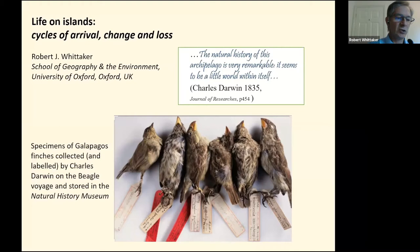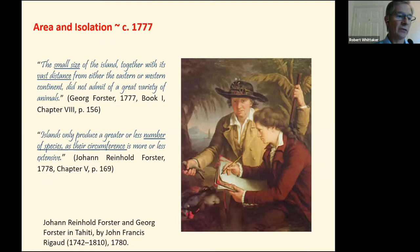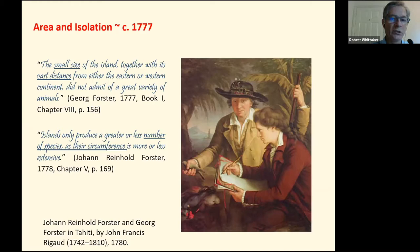I think Charles Darwin put his finger on it in this observation when he wrote: 'The natural history of this archaic world is very remarkable. It seems to be a little world within itself.' Even before Darwin, the German father and son naturalists Johann Reinhold Forster and George Forster made these simple but fundamental observations in their accounts of James Cook's second Pacific voyage of 1772 to 1775. And since then, hundreds of studies have been published on the form of what we call the island-species-area relationship, or ISAR for short, and how this relationship varies with geographical isolation from mainland sources.